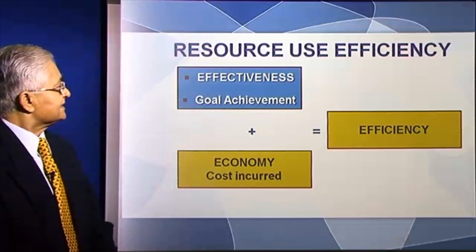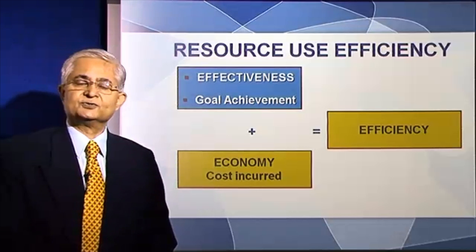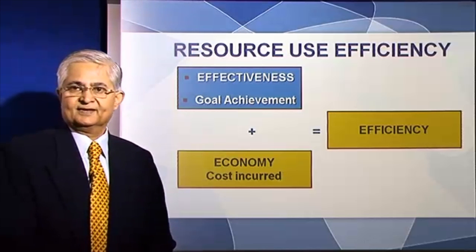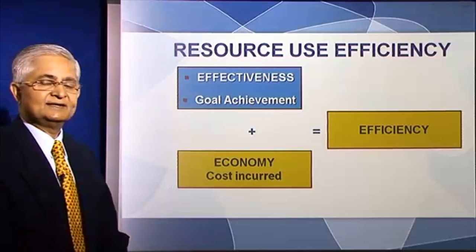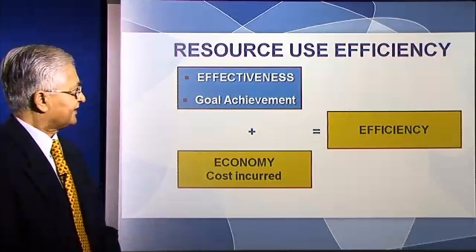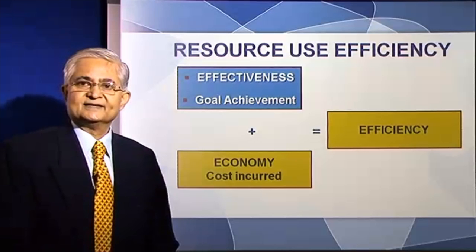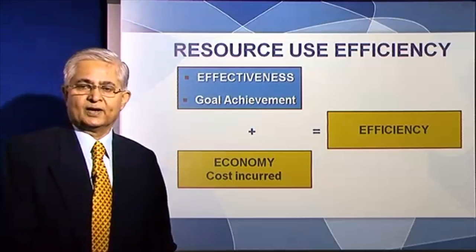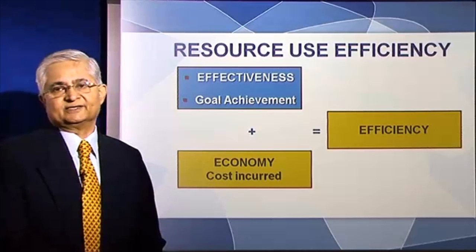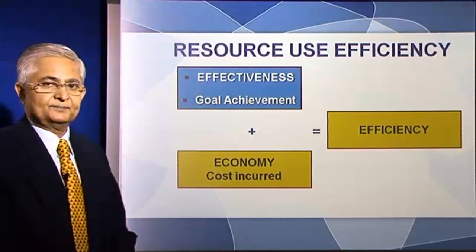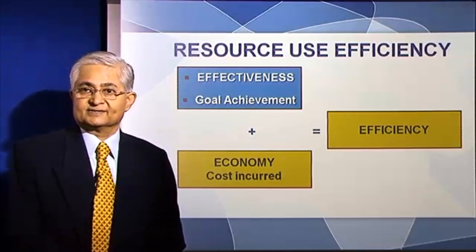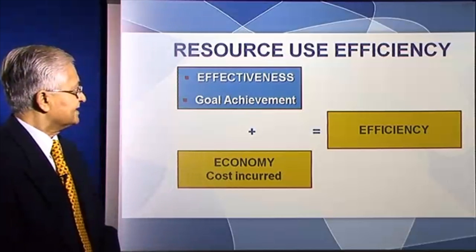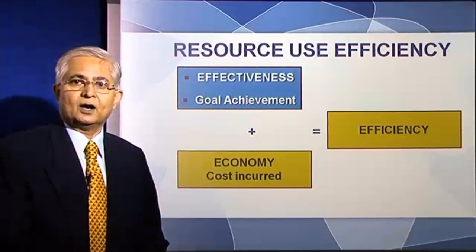Let's look at how efficiently a resource is used. Efficiency is a combination of two things: effectiveness and economy. Effectiveness is the degree to which the goal is achieved — an effective activity is one which achieves the goal of that activity. Economy is the cost incurred in doing this. So efficiency is achieving the goal in the most optimum manner.